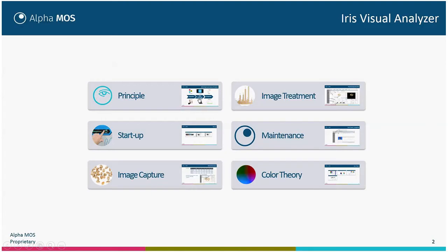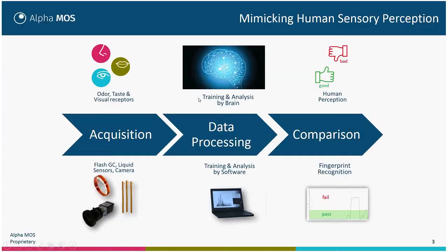Let's talk about the principle of the ARIS Analyzer. As for odor and taste, the ARIS Visual Analyzer works in order to mimic what occurs in human perception of color, odor, and taste, via the odor and taste visual receptors — which are the nose, the tongue for taste, and the eye for color and shapes. These signals are treated by the brain, which allows interpretation of what is seen, smelled, or tasted.